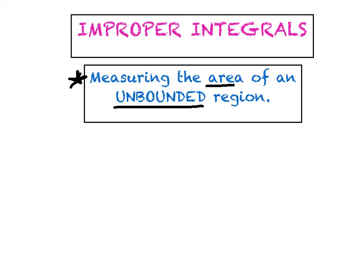You would naturally suspect that if the region is unbounded and it extends infinitely, then the area must also be infinite. But we're going to look at examples today where we actually have a finite amount of area within an unbounded region, which is certainly mind-blowing.